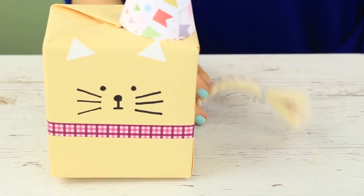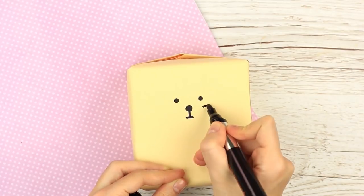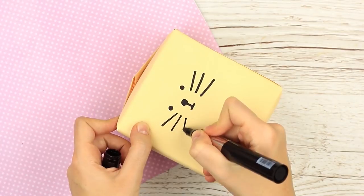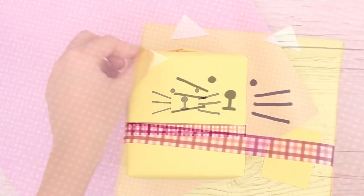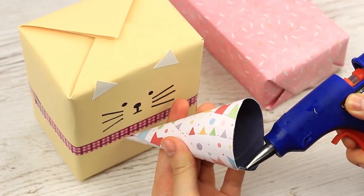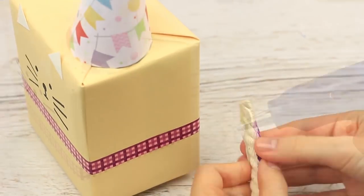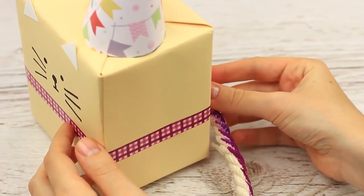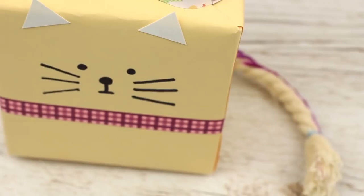The next animal we are going to create is a cat. Draw a cat face. The simpler, the better. Embellish the package with thin plaid ribbon tape. Take two white triangles for ears. Put a bright party hat on the cat. Hot glue a rope tail. You can paint it purple beforehand. The adorable little cat in a party hat looks like a funny toy with a surprise inside.